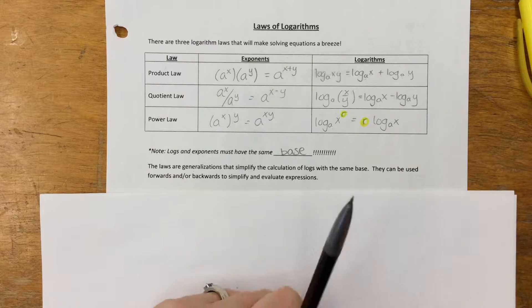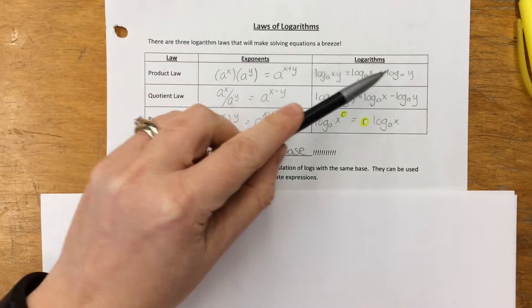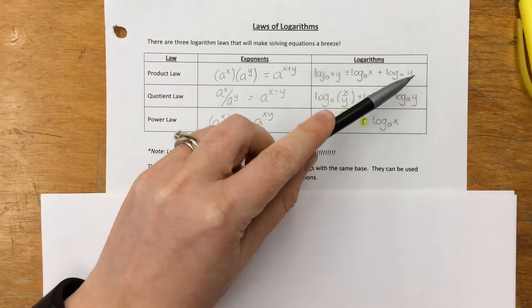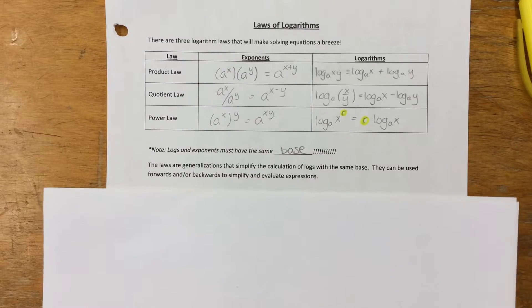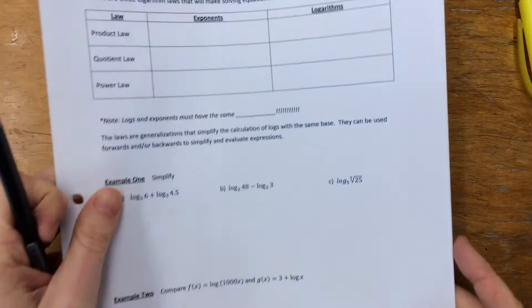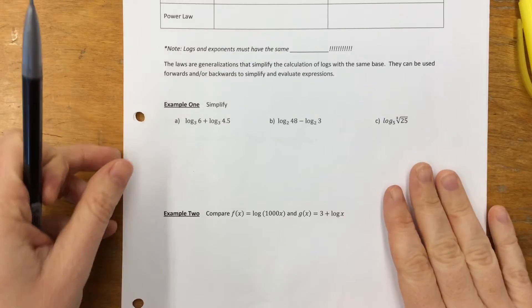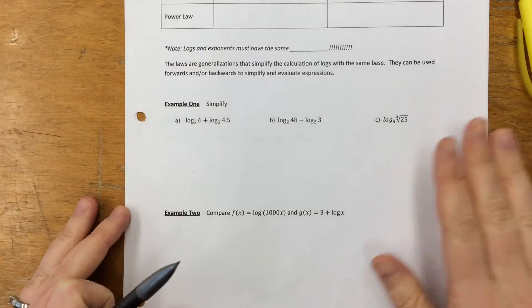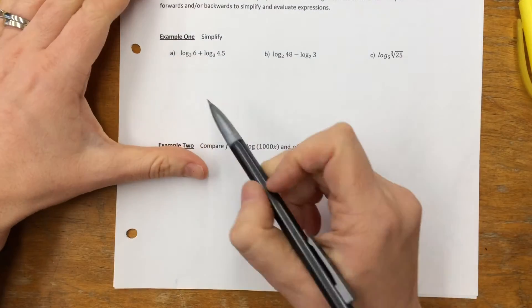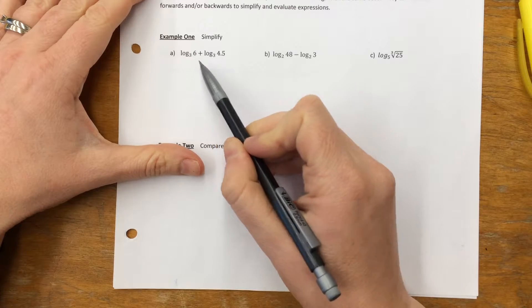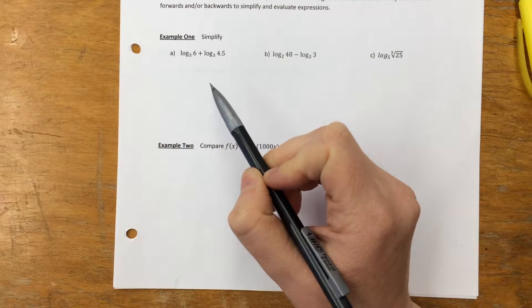These laws can be used forwards or backwards — we might take from one form and go to another. So let's get going with some examples. Our first question asks us to simplify log base 3 of 6 plus log base 3 of 4.5.